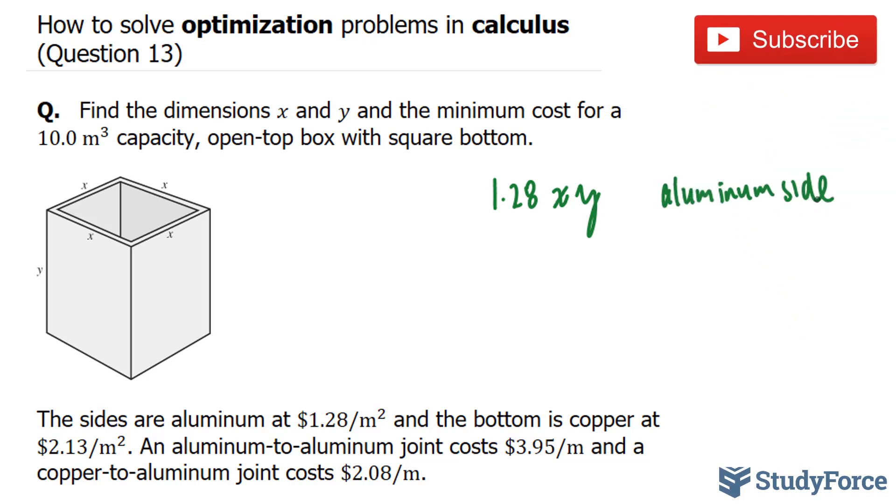We're told that the bottom is composed of copper and that it costs $2.13. Since the dimensions of the bottom are x times x, we'll take 2.13 and multiply that by x squared. That's the copper bottom.